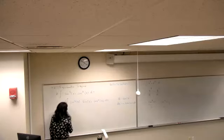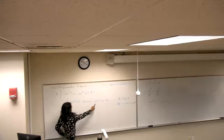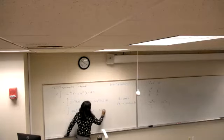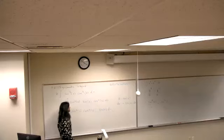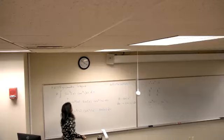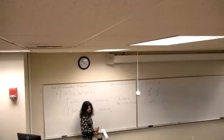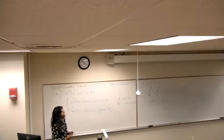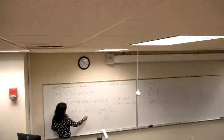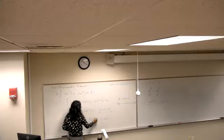If u is cosine, du is negative sine x dx. Back to this. Let me rewrite it this way. It doesn't say negative, but that is negative du. Do we agree? So I'm going to write this part as negative du.